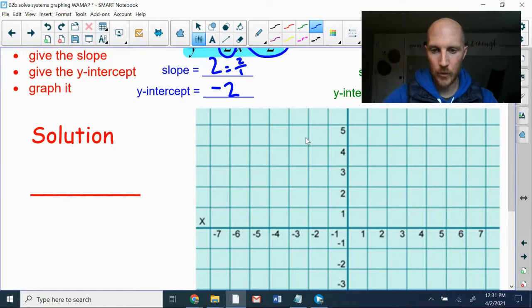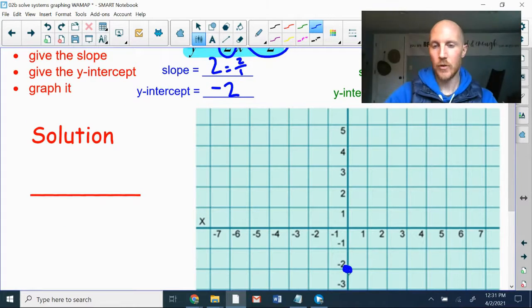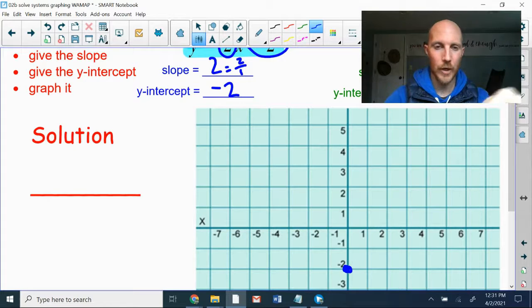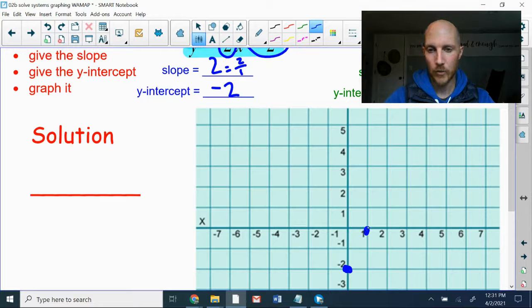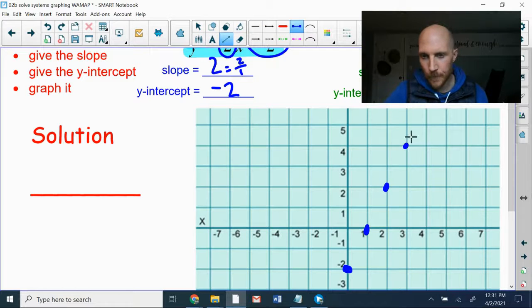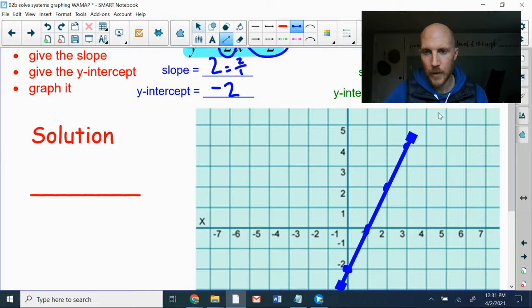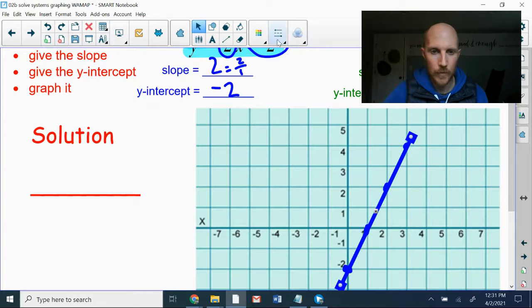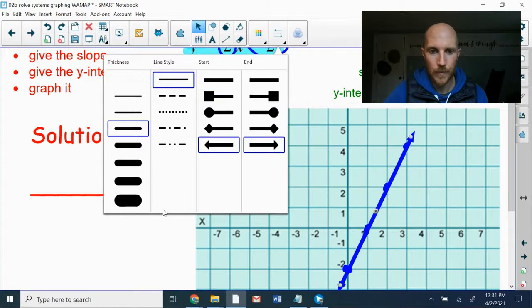And so if we graph that blue one, we're going to start on the Y axis up and down at negative two. And then use the slope to find the next point. So from that point that we just drew, we're going to go up two spaces, that's the rise, and to the right one, that is the run. And then repeat that process up two over one, up two over one, up two over one. And then we'll go ahead and draw a line right there. Get rid of these squares.